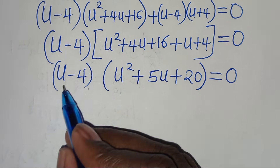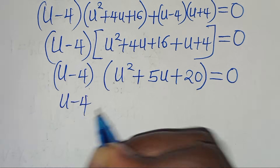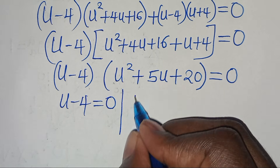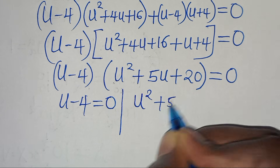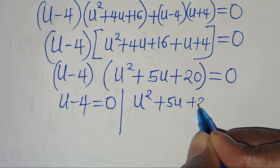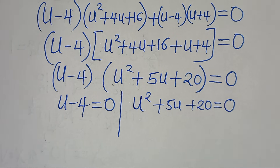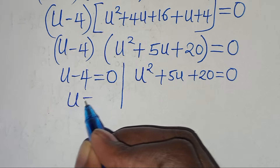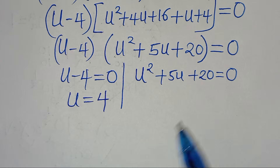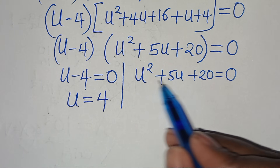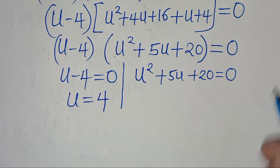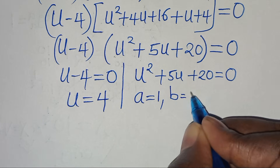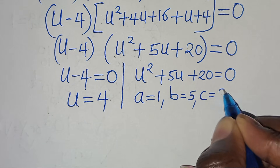We have got two parts. The first part is u minus 4 equals 0. The second part is a quadratic equation, which is u squared plus 5u plus 20 equals 0, where a is equal to 1, b is equal to 5, and c is equal to 20.